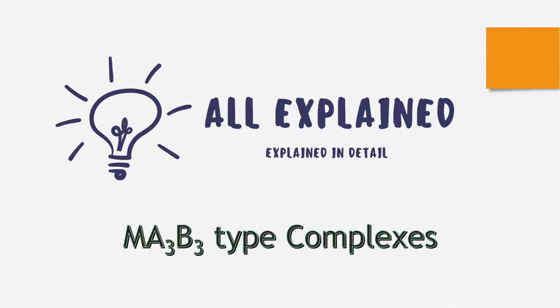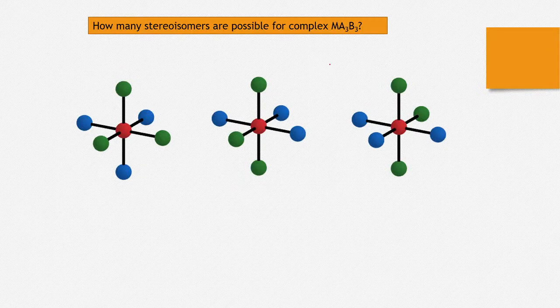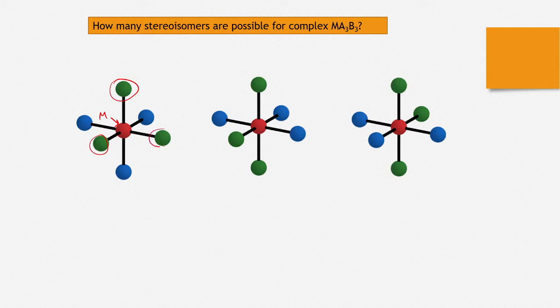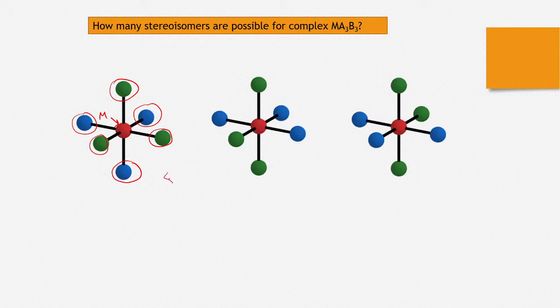In this video, I will be talking about MA3B3 type complexes. You can see these kind of molecules. This is your central atom, which is denoted by M here. And you have three A's, which is denoted by green sphere here, and three B's. Whether the green is A or the blue is A, it doesn't matter — the other one is B. So you can have these kind of molecules here.